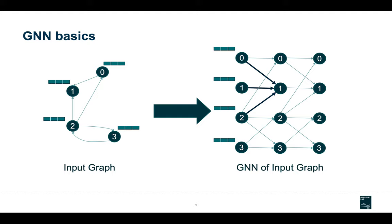A graph neural network, or GNN, takes two things as input: the input graph, and a feature vector per node in the graph. In a GNN we have multiple layers where each layer has a set of all the vertices in the input graph. For instance, with the GNN on the right for the input graph on the left, we see three layers where each layer has all four vertices. We have edges between vertices across layers if those edges exist in the original graph. So vertex one in the GNN has an edge from zero to one, one to one, and two to one, because in the original graph those edges exist — along with the self-loop.